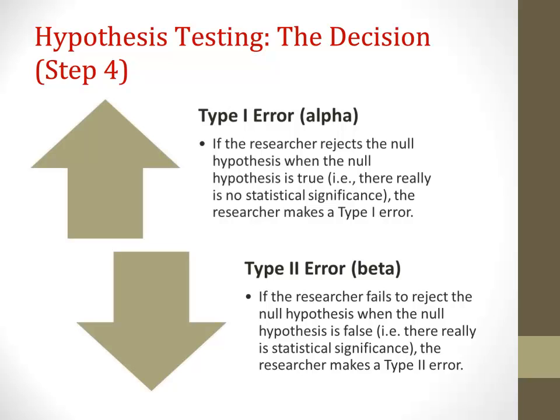Type 2 errors are often the result of a lack of statistical power — you may not obtain statistically significant results because the power is so low. This is a concept we'll review in another tutorial.